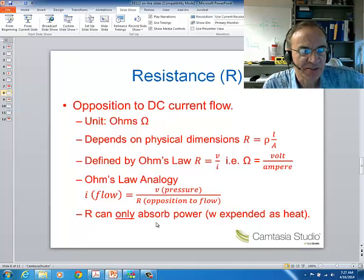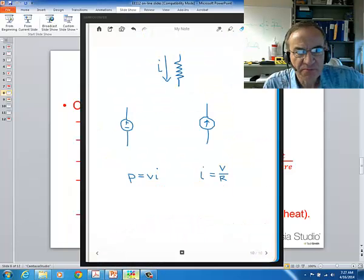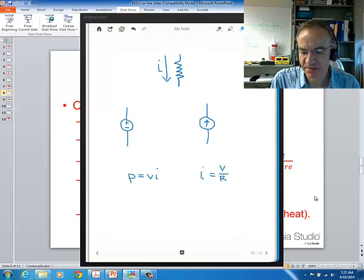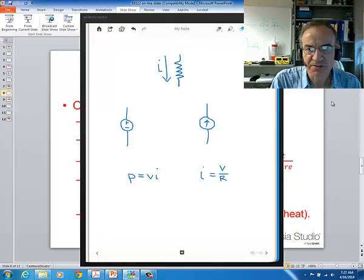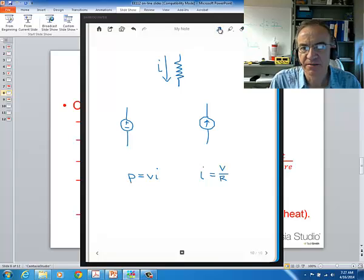Now, also important about resistors, since they're like friction, analogous to friction, is resistors can only absorb power. They expend energy as heat. If we have a resistor in a circuit, this is the circuit symbol. That's the symbol for a resistor. We already talked about a symbol for a voltage source and a current source. I have those written down here.